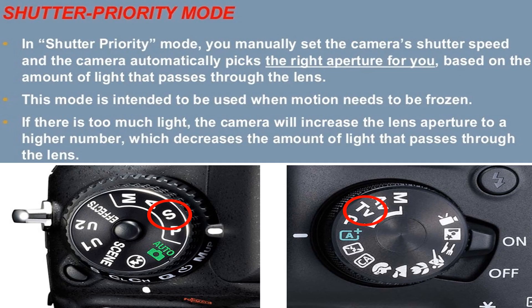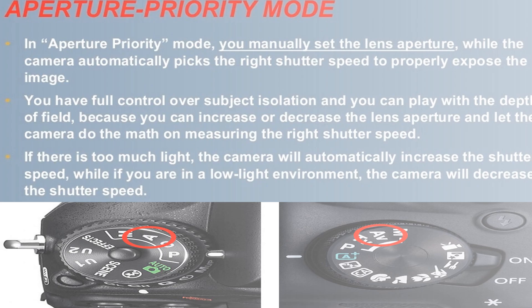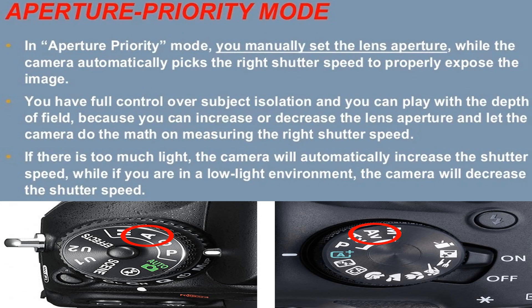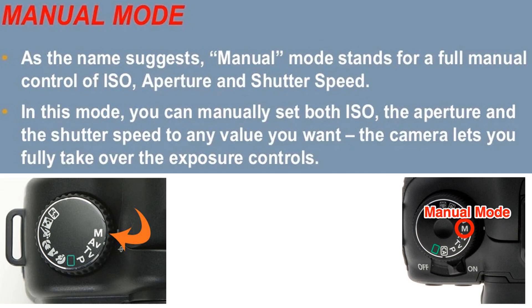In Aperture Priority mode, you manually set the lens aperture while the camera automatically picks the right shutter speed to properly expose the image. You have full control over subject isolation and can play with depth of field by increasing or decreasing the lens aperture. If there is too much light, the camera will increase the shutter speed; in a low-light environment, the camera will decrease the shutter speed.